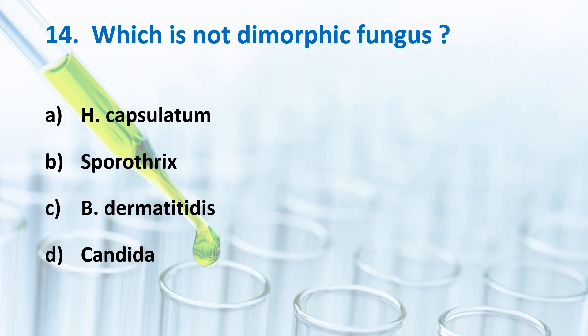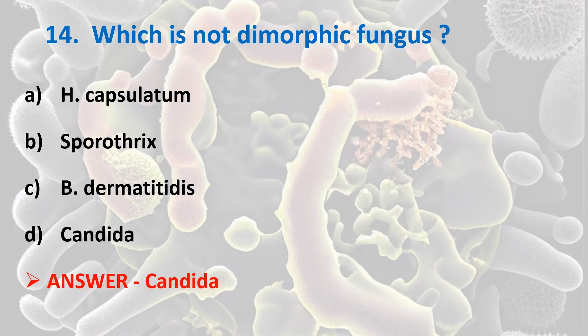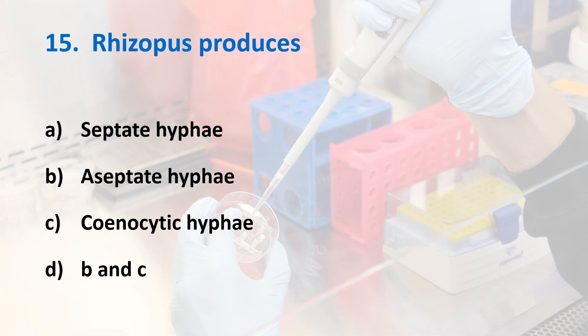Fourteenth question: Which is not a dimorphic fungus? Options: Histoplasma capsulatum, Sporothrix schenckii, Blastomyces dermatitidis, Candida. Answer is Option D, Candida. Candida is a yeast-like fungus which possesses pseudohyphae. Dimorphic fungi include Histoplasma capsulatum, Sporothrix schenckii, Blastomyces dermatitidis, Coccidioides, Paracoccidioides, and Penicillium marneffei.